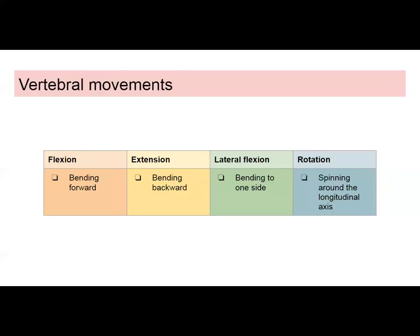The vertebral column gets stabilized through the actions of several ligaments. Movements of the vertebrae include flexion — bending forward — extension when returning to anatomical position, lateral flexion when bending to one side, and rotation when spinning around the longitudinal axis. If you're able to twist at your waist, that's more of a rotational movement.